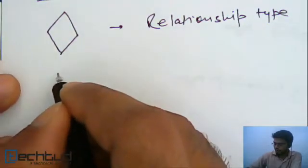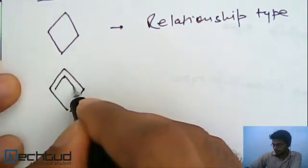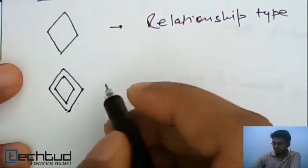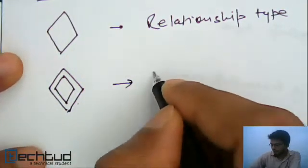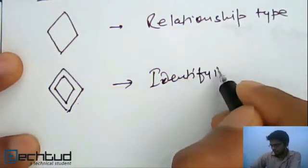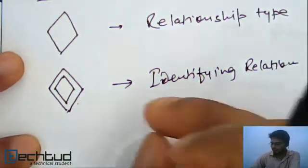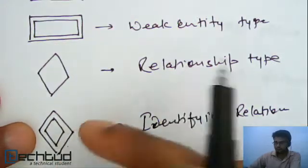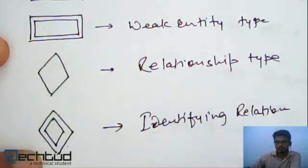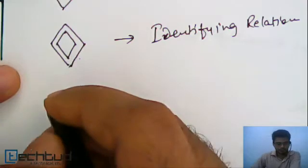Similarly, we have something which is represented by double diamond. So, what would it be? Weak relationship. Is it? It is called identifying relationship. Relationship. Well, this identifying relationship has some relation, I mean has something to do with this weak entity and everything I will be explaining in the weak entity lecture.